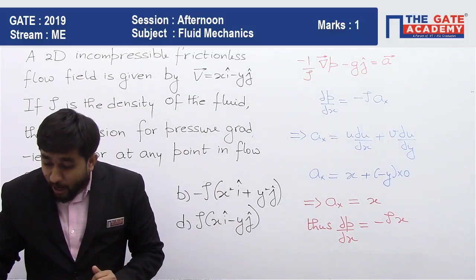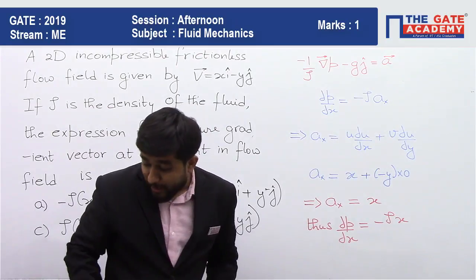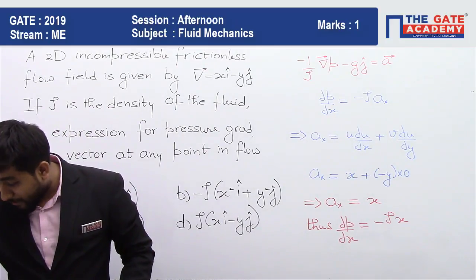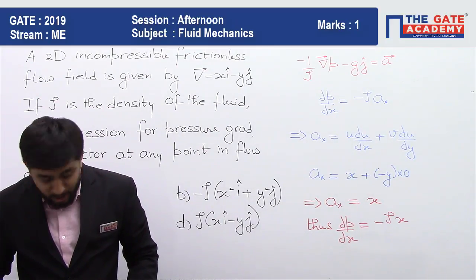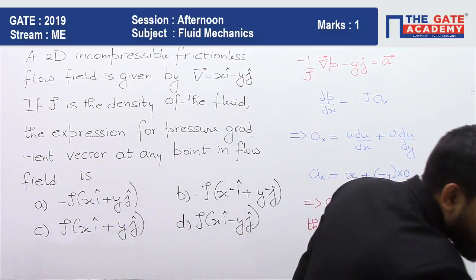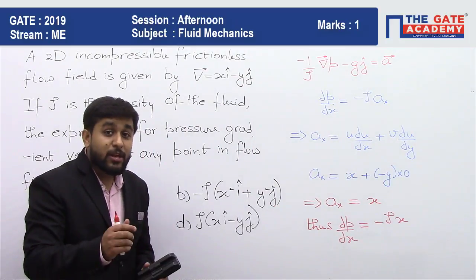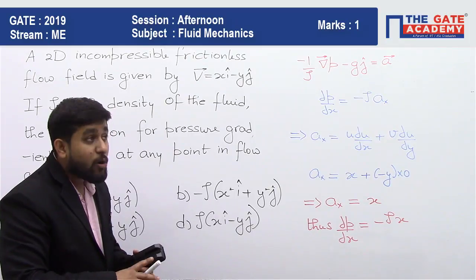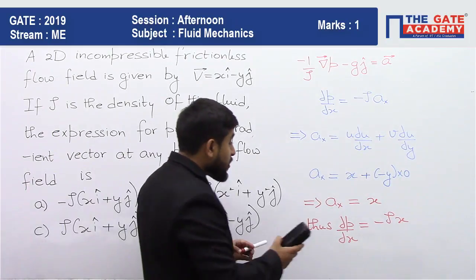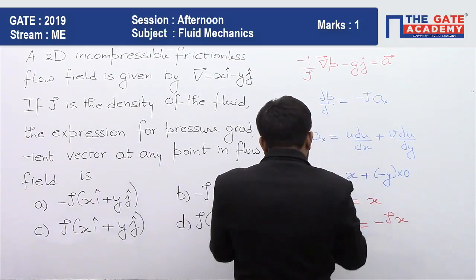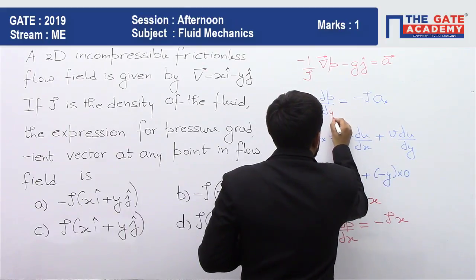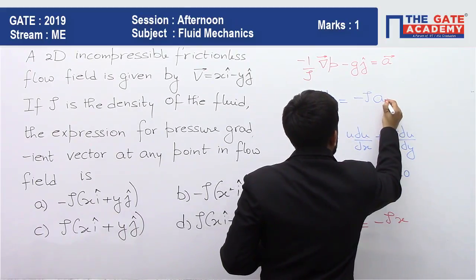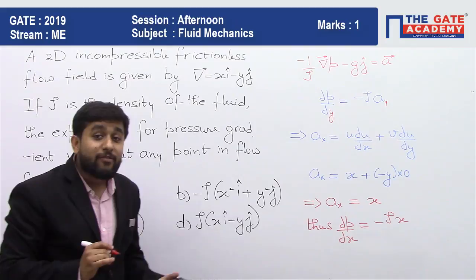Similarly, you can find out a y also. So students, please remember this term. Del P by del x that is equal to minus rho x. Similarly, for pressure gradient, we need to find out del P by del y also. So when you will talk of del P by del y, I think del P by del y will be written as minus rho into acceleration along the y direction.